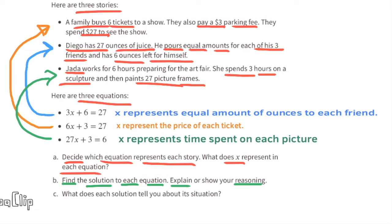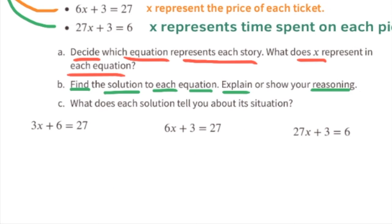Find the solution to each equation. For 3x + 6 = 27: first subtract 6 from both sides, giving 3x = 21. Then divide both sides by 3 — that's the second step. 3x divided by 3 equals x, and 21 divided by 3 equals 7. So x equals 7.